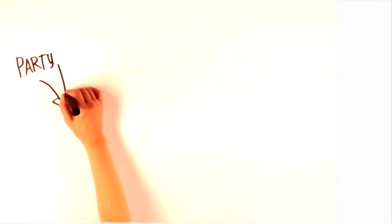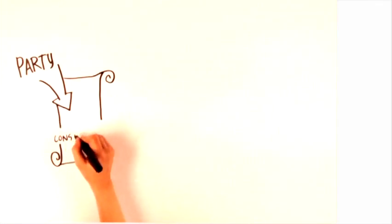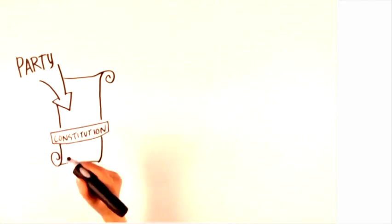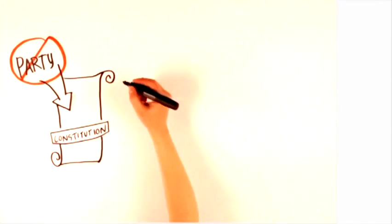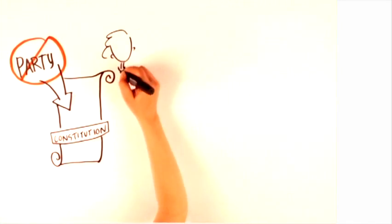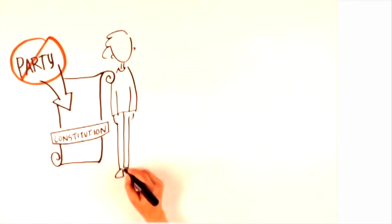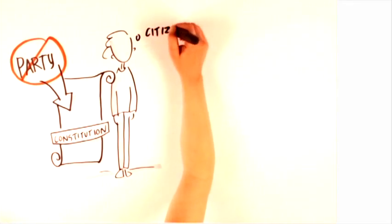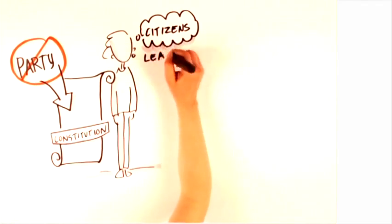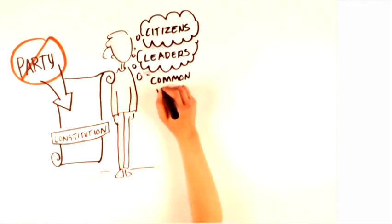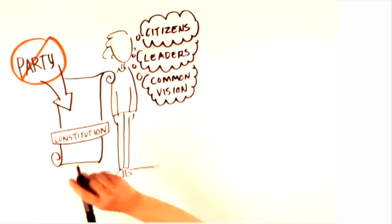In actual fact, political parties aren't even a formal part of Canada's constitution. That is, they're not a part of the rulebook for being the government. Still, politicians have kept them around because, to a certain degree, they make voting easier for citizens, make it easier for leaders to govern, and help citizens and candidates organize around a common vision for the country based on how they see the world.